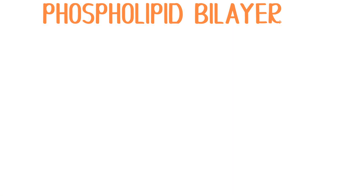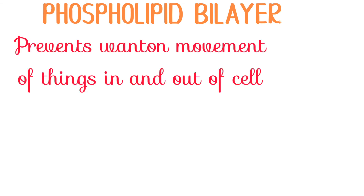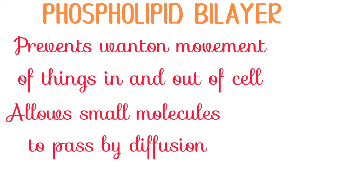This system is actually pretty awesome as it prevents the unnecessary entry and exit of stuff from the cell. The molecules that pass through the bilayer by diffusion and not through special channels are usually small and non-polar, like carbon dioxide or oxygen. But water, even though it's polar, can still get through by diffusion — so it's one of the exceptions.